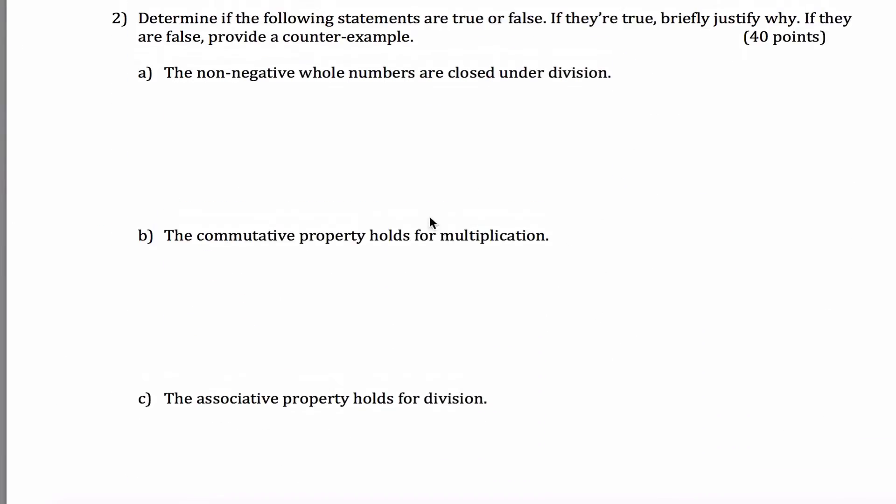All right, number two, determine if the following statements are true or false. If they're true, justify. If not, provide a counterexample. The non-negative whole numbers are closed under division. That is false. Counterexample, I don't know, five divided by two is not a non-negative whole number. The answer is two and a half, but that's not one of these numbers. So this set of non-negative whole numbers is not closed under division because you can take two elements of the set to produce a third element that is not in the set.